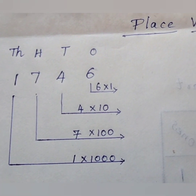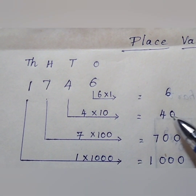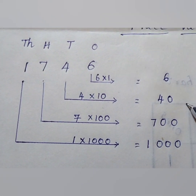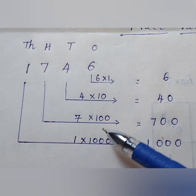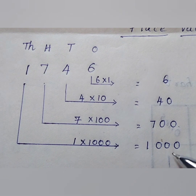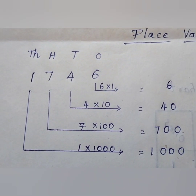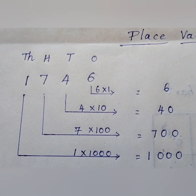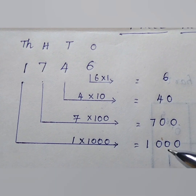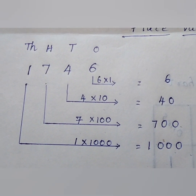Now look at the answers: 6 into 1 is 6; 4 into 10 is 40; 7 into 100 is 700; and 1 into 1000 is 1000. Now if you add up all of these, you will get the same number 1746. These are the place values of each digit.